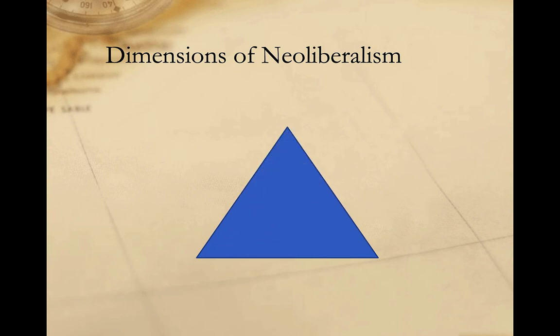Neoliberalism can be thought of as having three dimensions. A social dimension holds that as people from different countries come into ever greater contact, they understand one another more and become less supportive of war. The opening of cultural expression and exchange and the discovery of shared values and beliefs reduces animosity between groups. This idea is not really very different from those expressed by classical liberalism.